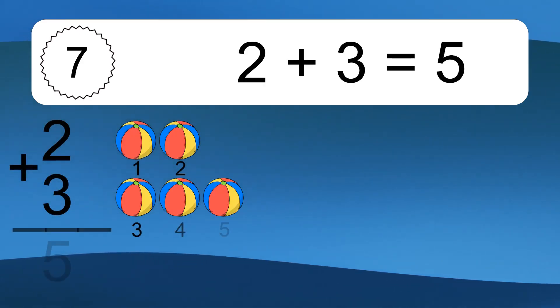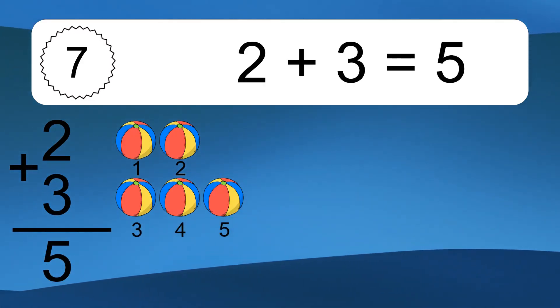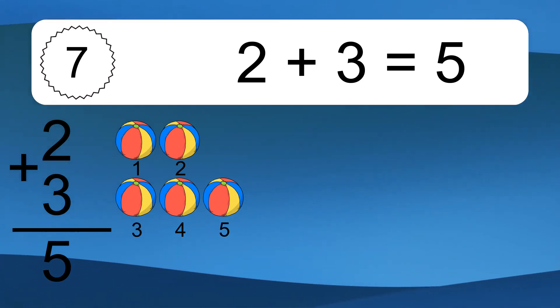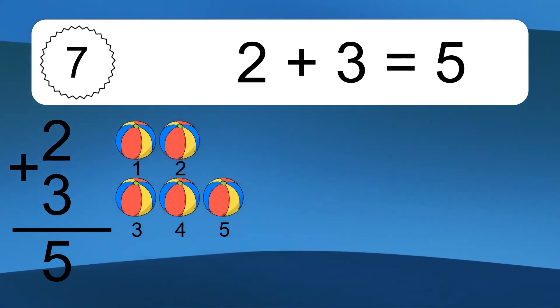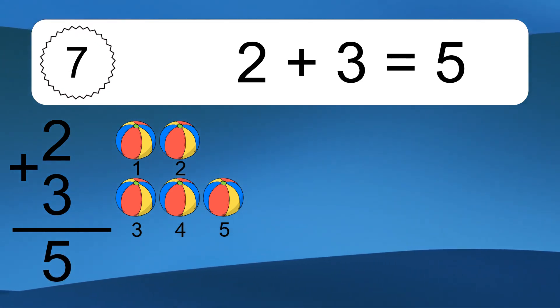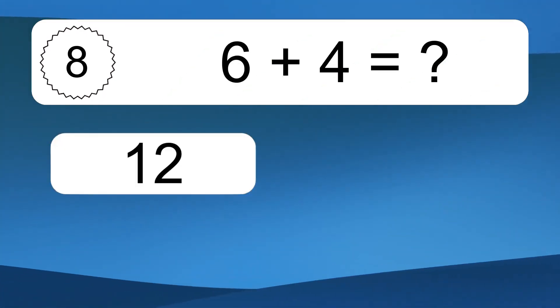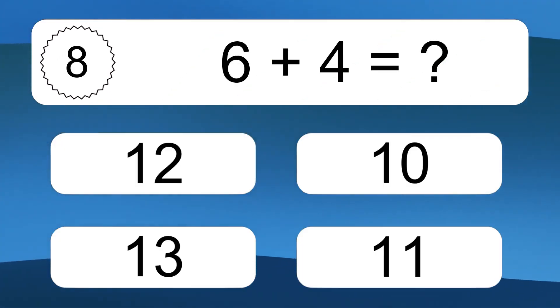2 plus 3 equals what? 2 plus 3 equals 5. Let's count it. 1, 2, 3, 4, 5.